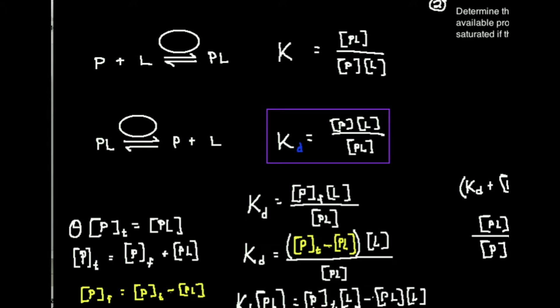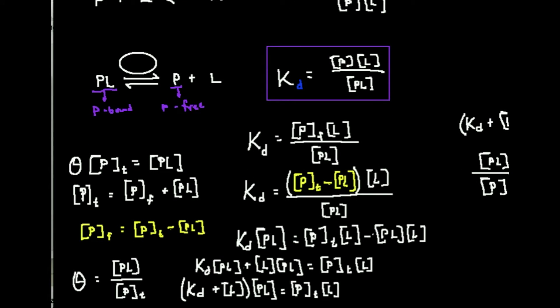Looking at the actual equilibrium reaction, notice here I have protein that's bound to ligand — I'm going to call this bound protein. And this protein here is not bound to the ligand, so I'm going to call this free protein. Logically, I have some concentration of protein that's free and some that's bound. If I add the two together, that gives me the total concentration of protein. So the total protein concentration is equal to the concentration of free protein plus the concentration of the bound protein, or PL complex.